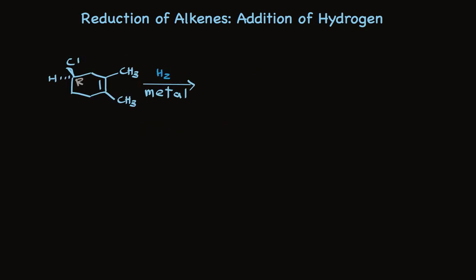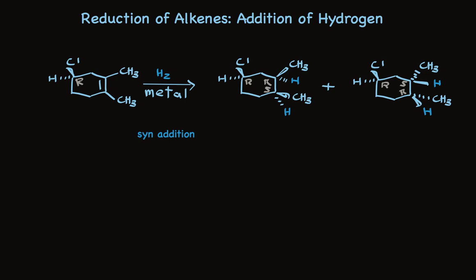This molecule is somewhat more complicated because it already has a stereogenic center, and we're starting with one single enantiomer. Remembering that the reaction proceeds with syn addition, we can write the structures of two products that will result. One product results from hydrogen adding to the bottom side of the double bond; the other results from hydrogen adding to the top side. When hydrogen adds to the bottom, we make R and S stereochemistries, and when it adds from the top, we make S and R. These are not enantiomers — these stereoisomers are diastereomers, and they are the only two that are made. Because they're diastereomers, we can expect them to be made in unequal amounts.